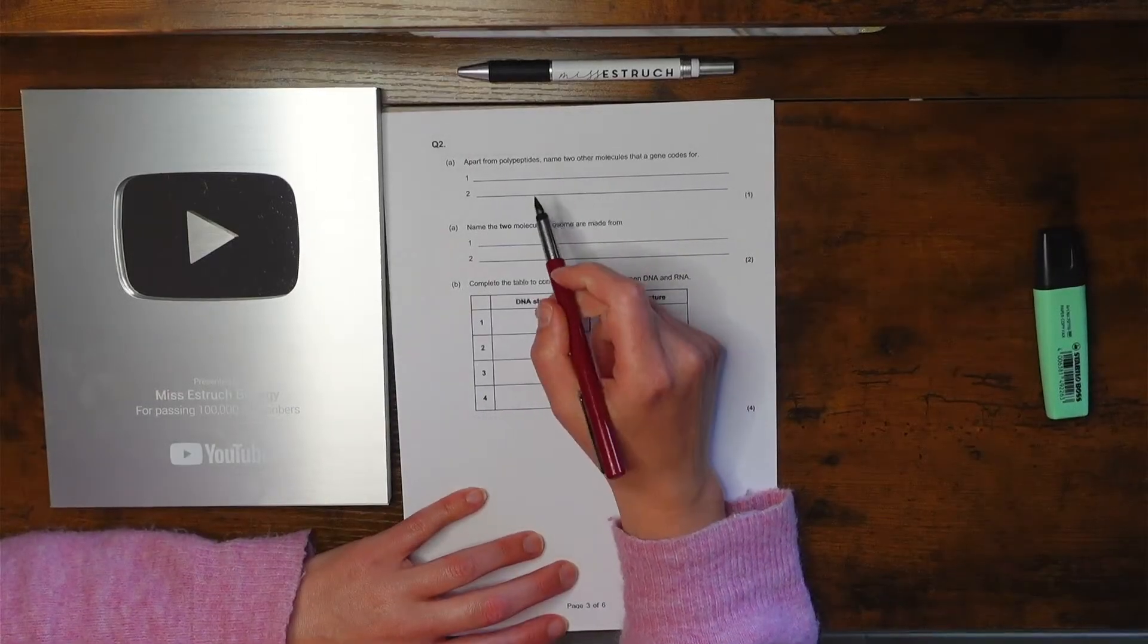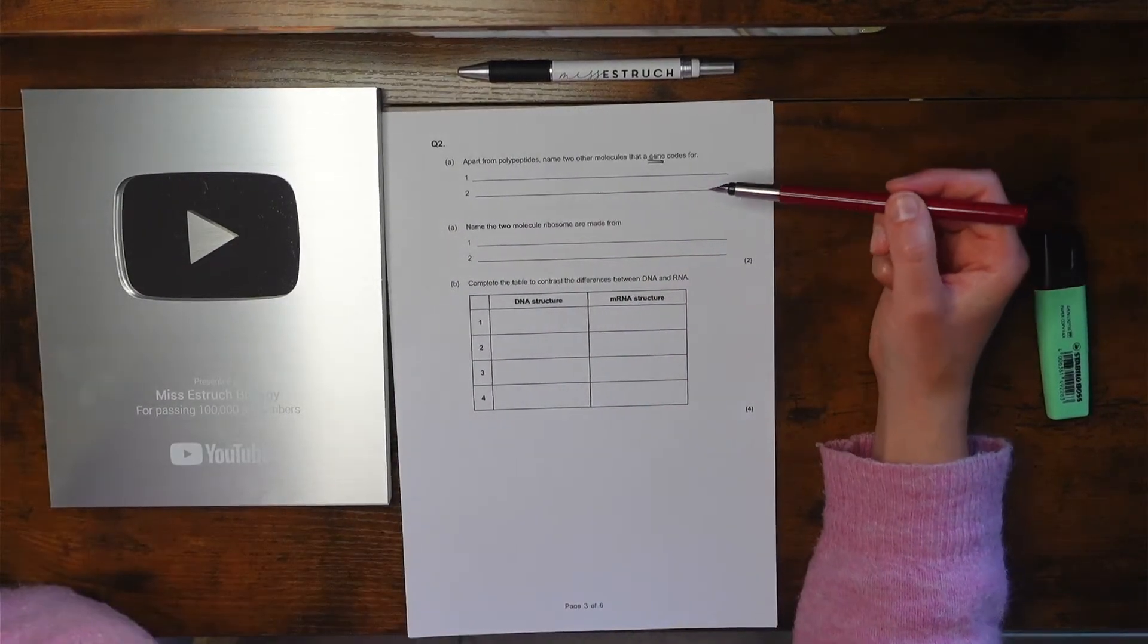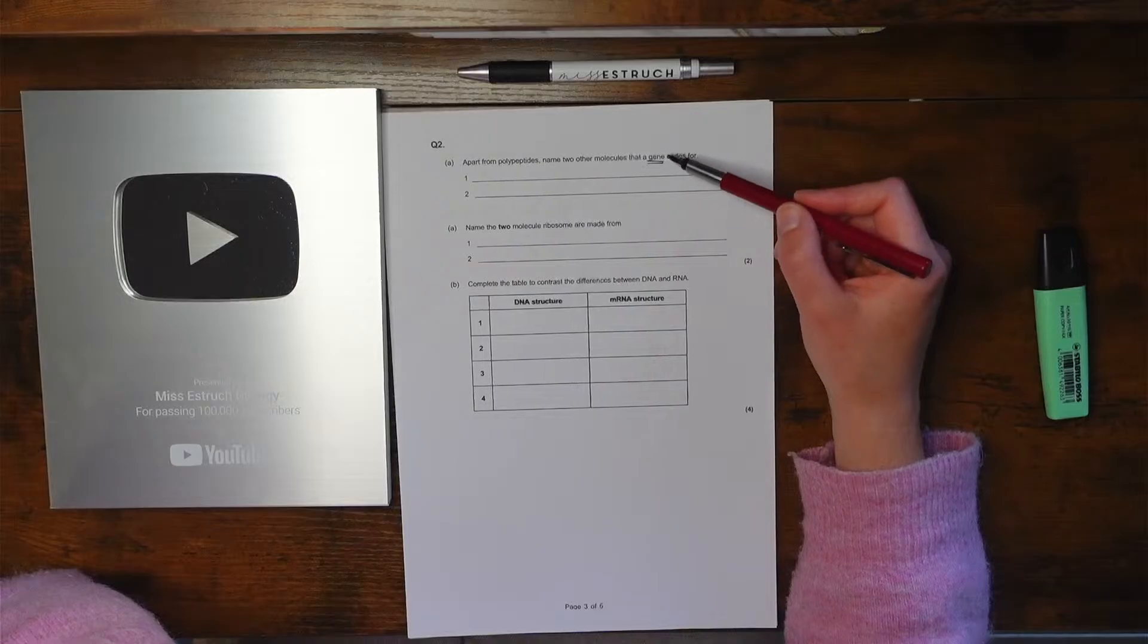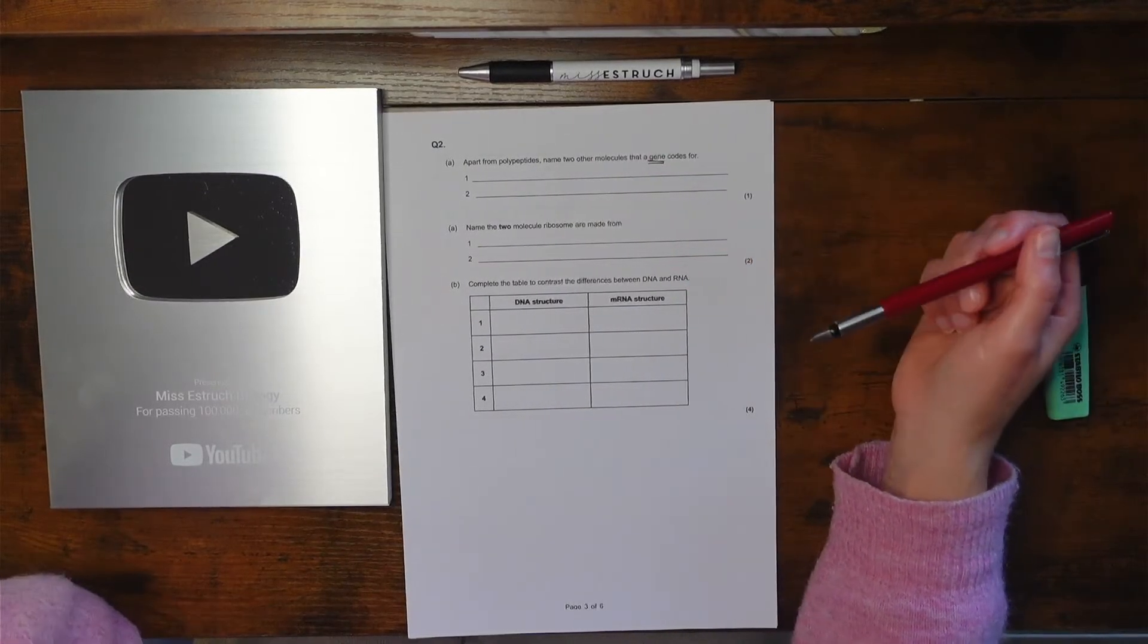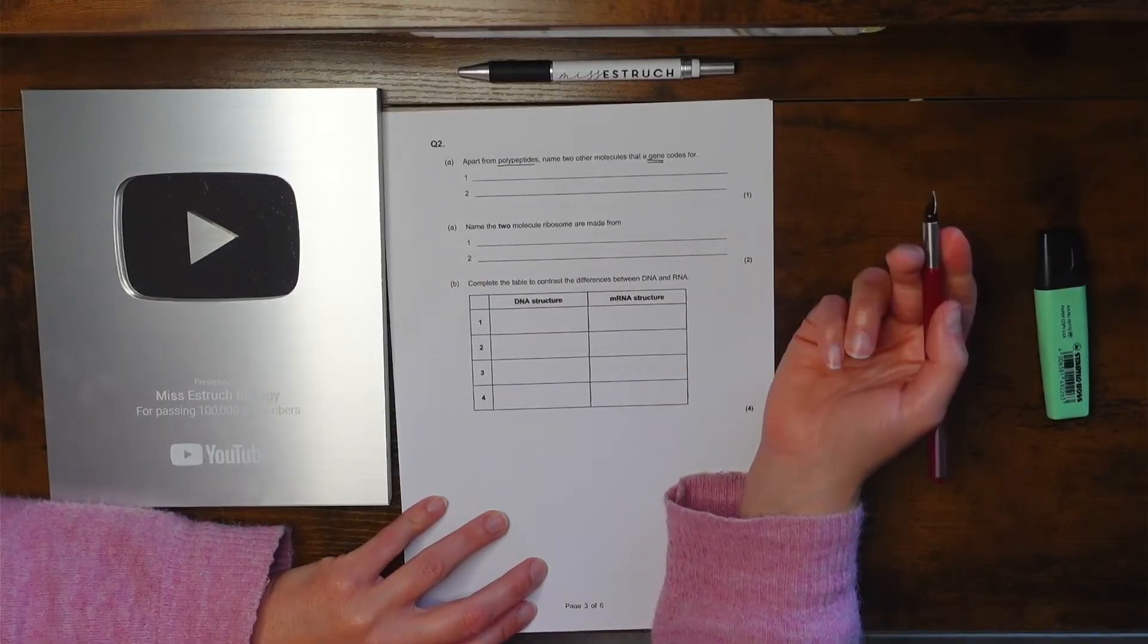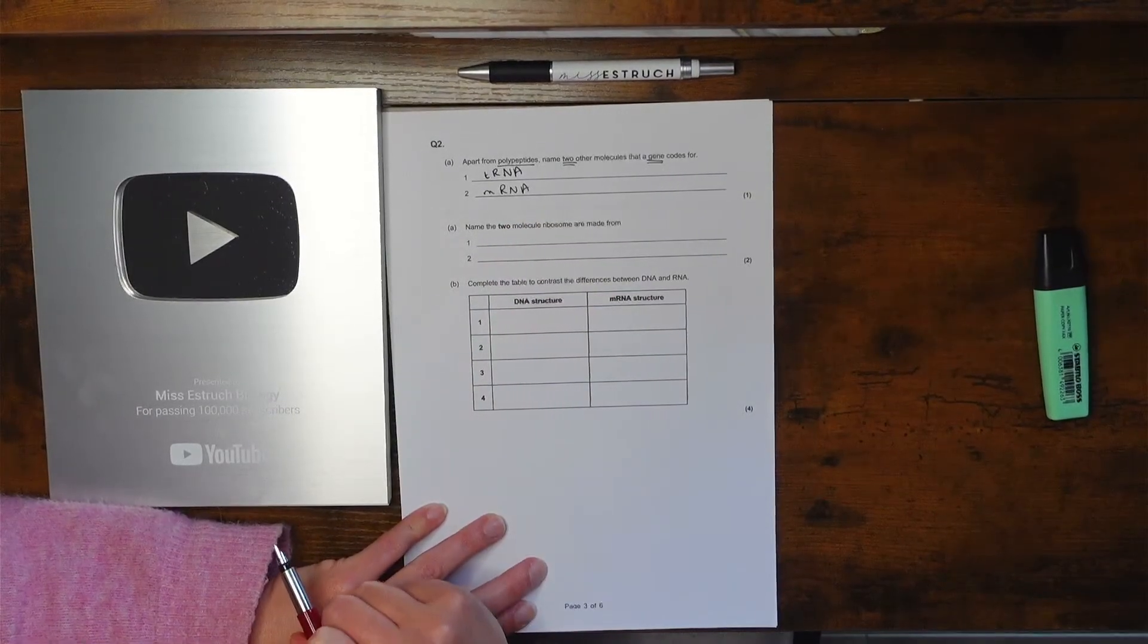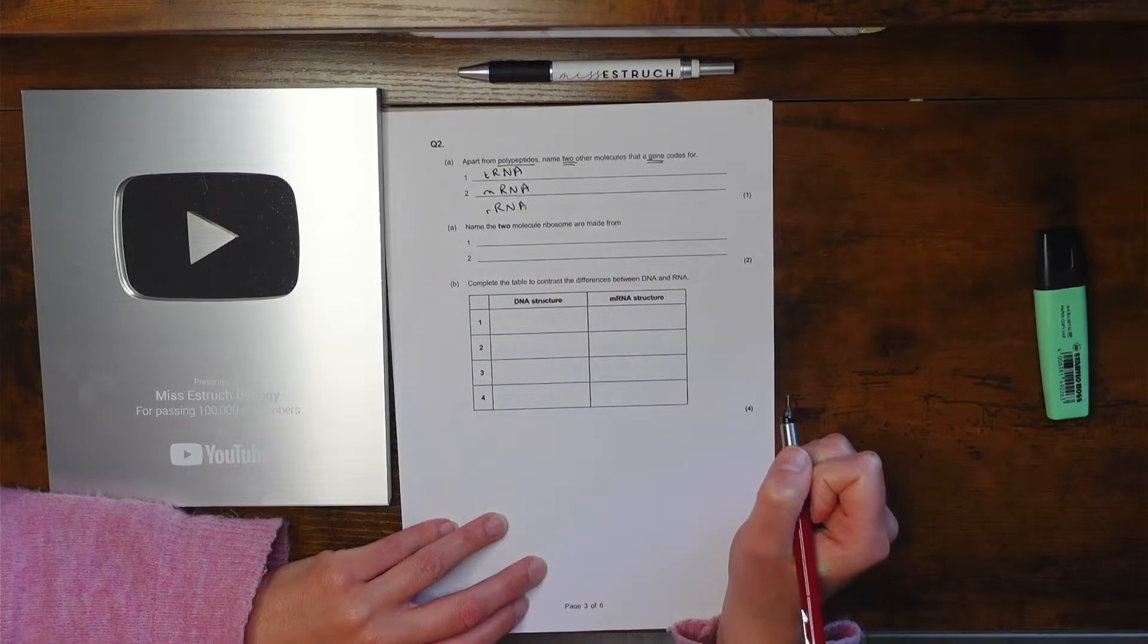Next one we've got: apart from polypeptides, name two other molecules that a gene codes for. This is testing your knowledge of the definition of a gene for - I'm not sure if you can see, so I might have panicked some people there - A-level, A-level. This is testing your knowledge of the definition of a gene for A-level. And for A-level, your definition of a gene is it's a sequence of DNA bases that codes for a polypeptide and functional RNA. They've already said though you can't talk about peptides - they said apart from peptides, what else does a gene code for. So it's functional RNA, but what that means is either tRNA, mRNA - I only need to give two so I don't need to give the third one, but just so you know what the third one would be as an option: rRNA. So you could have any of those.